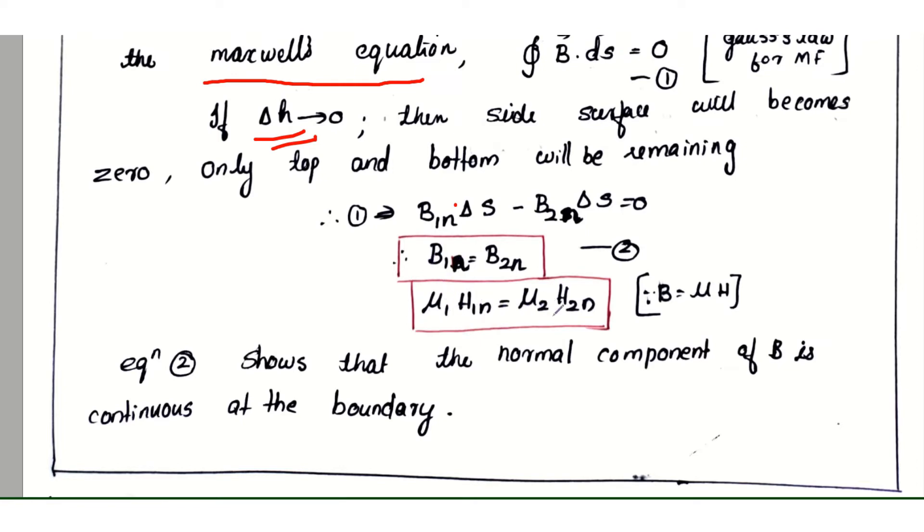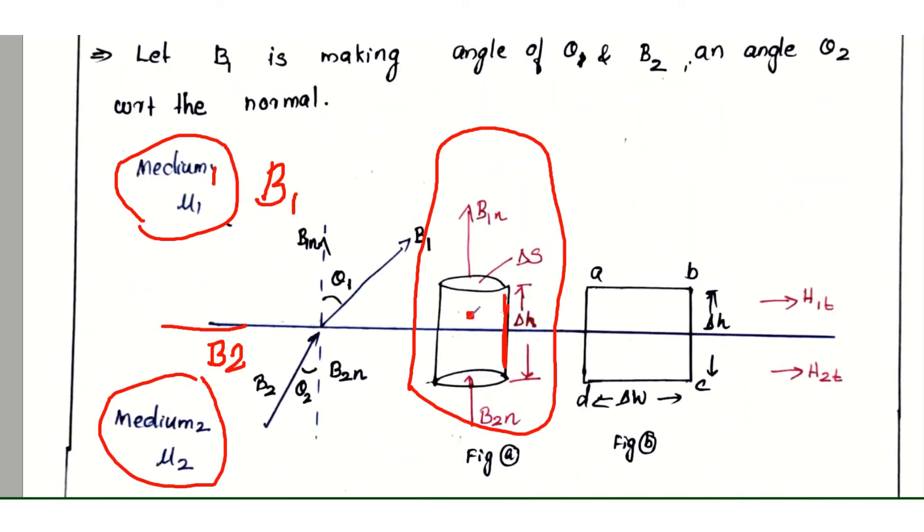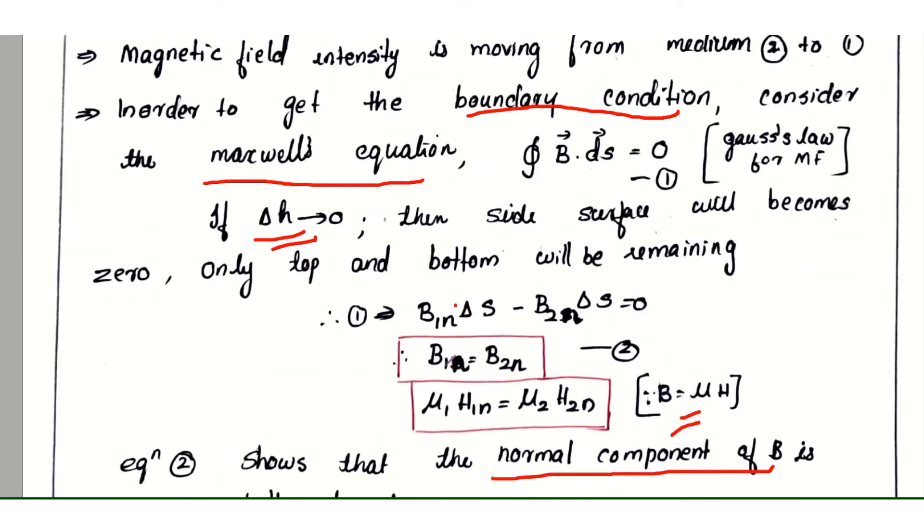This gives μ₁H₁ₙ = μ₂H₂ₙ. Since the value of B = μH, therefore equation 2 shows that the normal component of B is continuous at the boundary, because B₁ₙ = B₂ₙ.